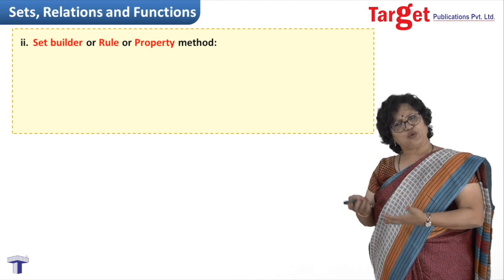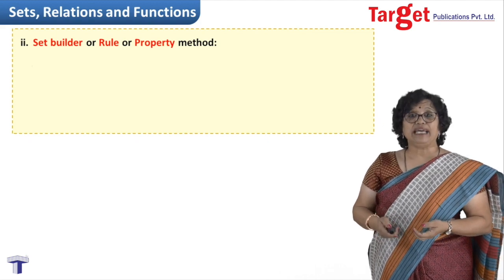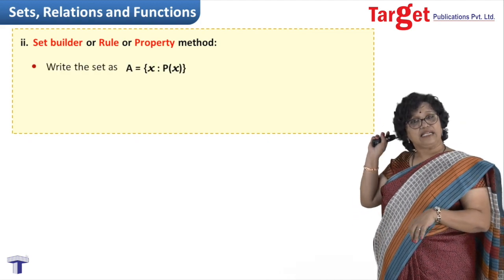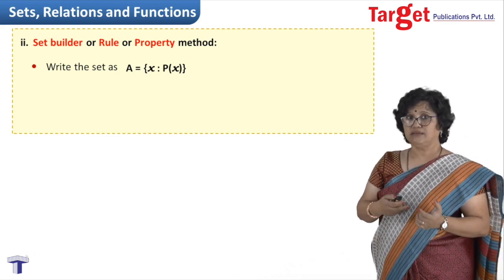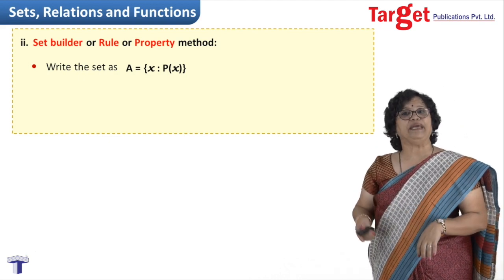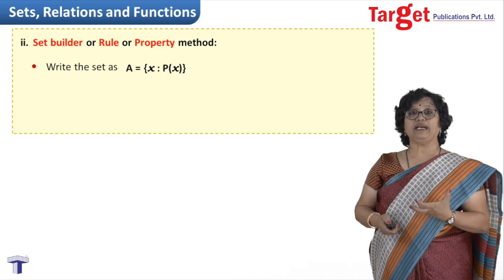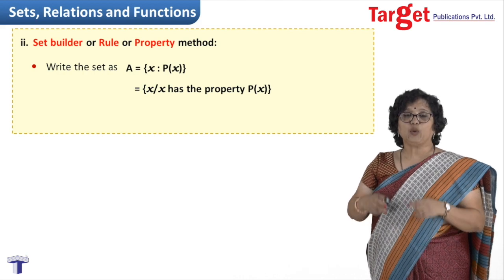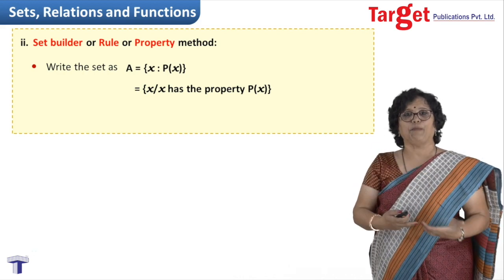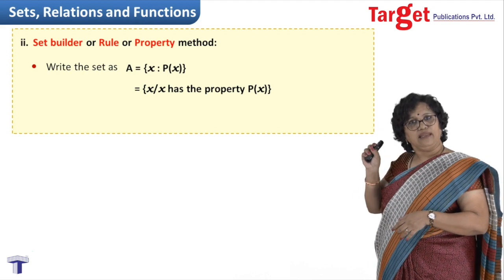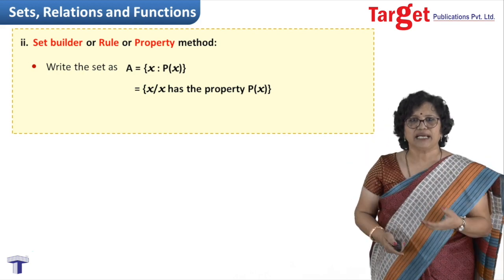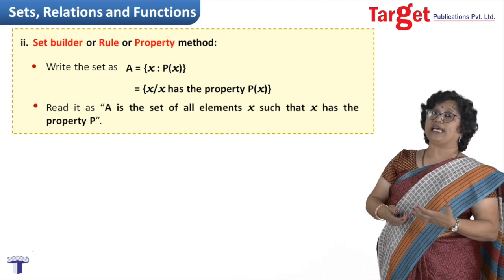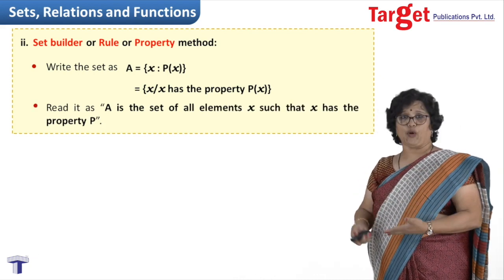In which we write curly bracket, then we write x, then we write 'such that', for which we use a colon, and then we write P(x). What P(x) means? P(x) is the property that x has. Like if I say x is an even integer, so x being even integer is its property. So x colon, I will write x is an even integer, something like that. So we read it as A is a set of all those elements x which possess that property P.